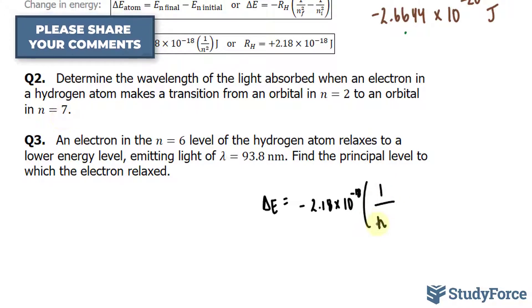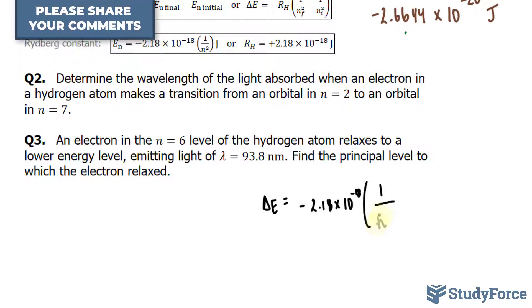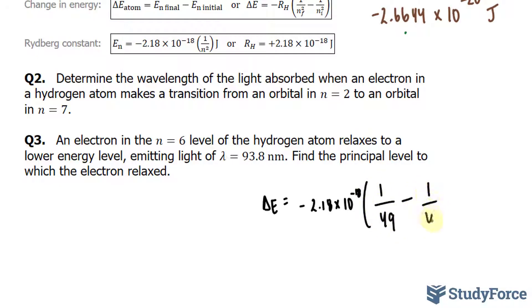So I'll replace this n with 7. And 7 to the power of 2 is 49, minus 1 over 4 because 2 to the power of 2 is 4.